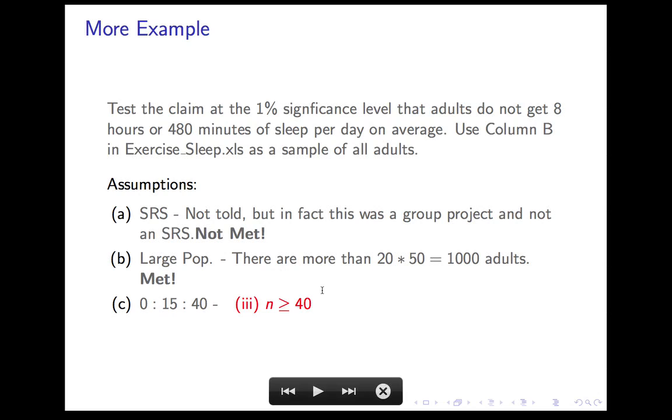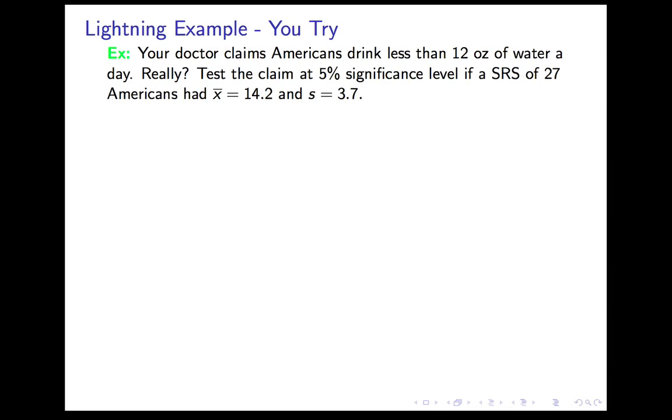0·15·40. This is easy. Well, it is. N is greater than 40. N is 50. So by rule 3, it's met. N is 50. That's a typo.